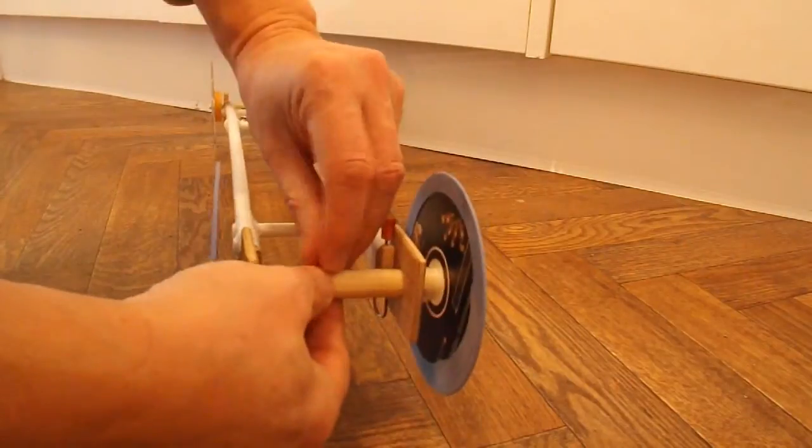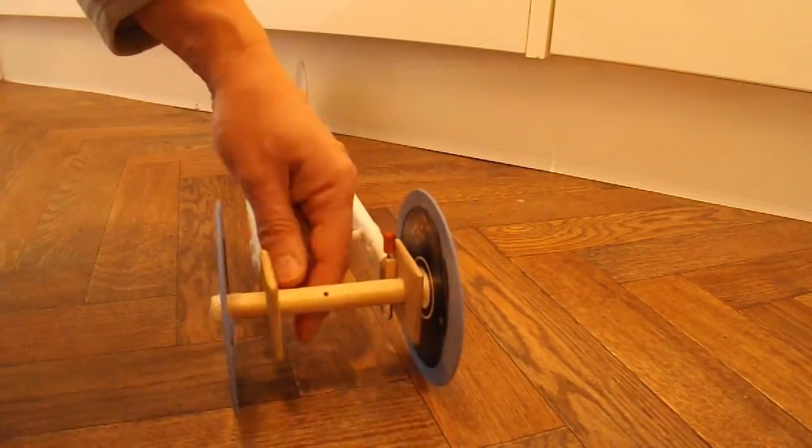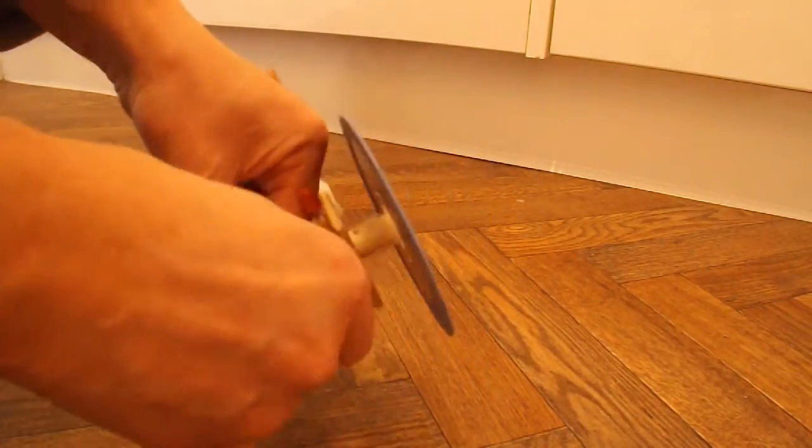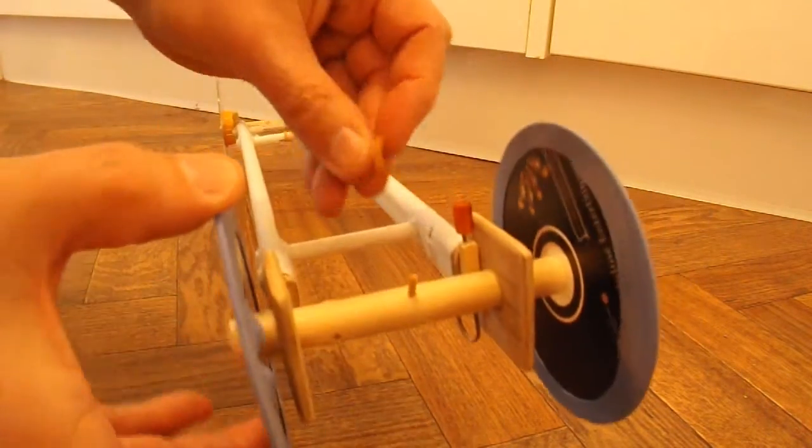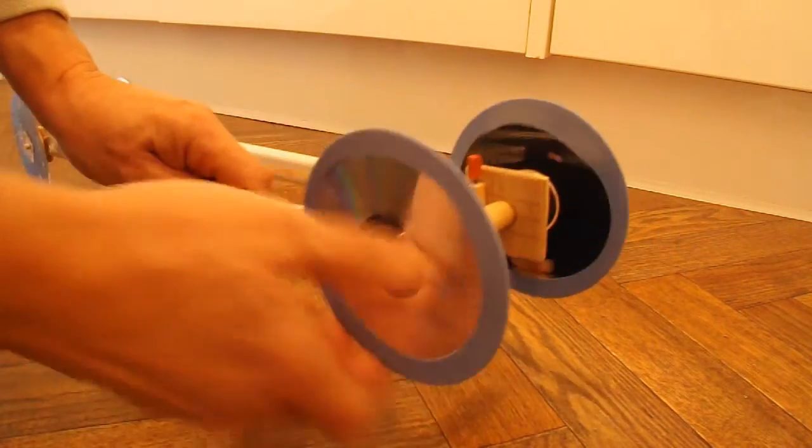So I'll take my bit of wire off. Put a wooden peg in instead. So here we've got our wooden peg there. Hook the rubber band over the peg. Wind it up a few times.